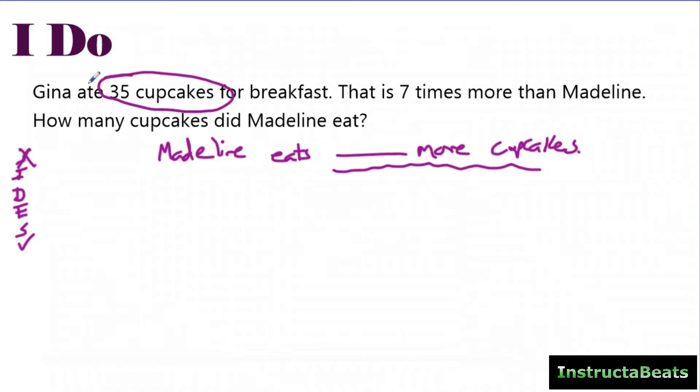I'm looking for anything about Madeline and anything about cupcakes. Gina ate 35 cupcakes for breakfast. That is seven times more than Madeline. I'm going to box this because this is a multiplicative comparison sentence. It's saying seven times more than Madeline. I always tell them the 'that' is talking about the sentence before. So that, meaning the 35 cupcakes, is - 'is' is an equal sign - seven times more than Madeline. So Gina equals seven times more than Madeline.